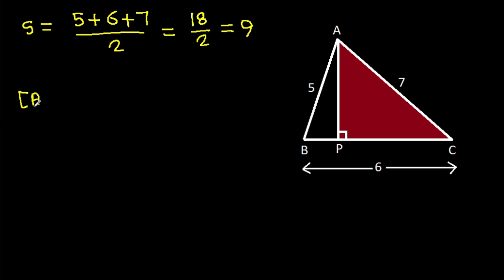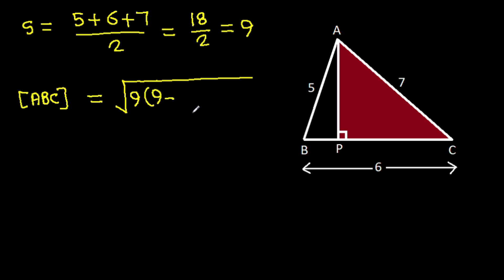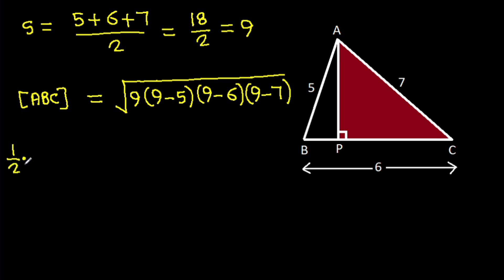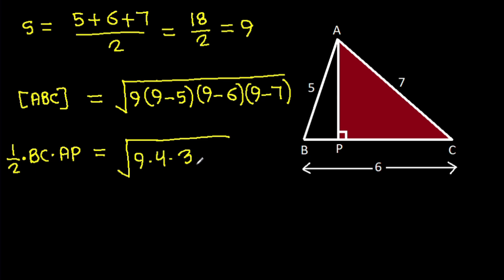So area of ABC will be root under S is 9, times (9 minus A is 5), times (9 minus B is 6), times (9 minus C is 7). And area of ABC is also equal to 1 over 2 times base BC times height AP.